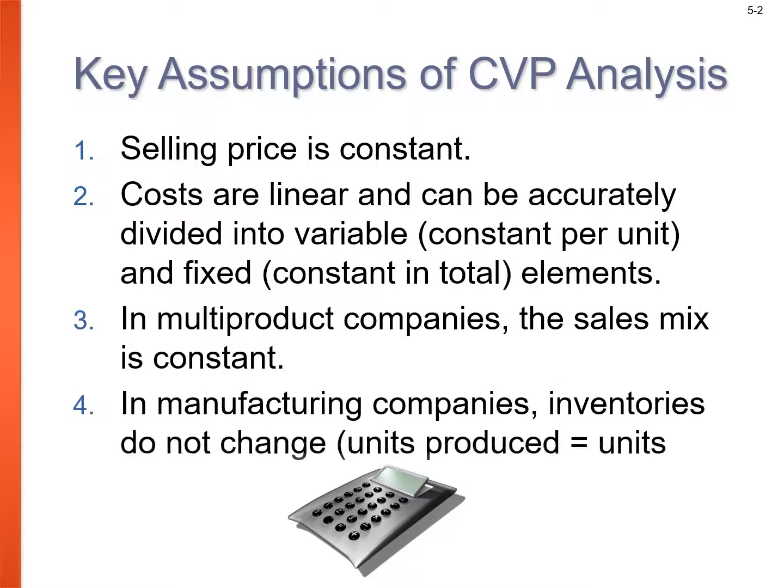Some things we need to state right up front when it comes to cost volume profit analysis: one, we assume selling price is constant. Two, costs are linear and can be accurately divided into variable cost per unit and fixed cost in total elements. In multi-product companies, the sales mix is constant. And in manufacturing companies, inventories do not change — units produced will equal units sold.